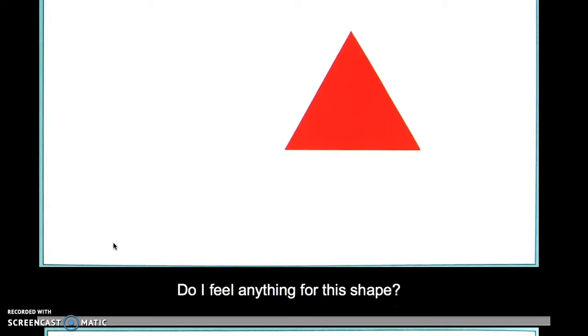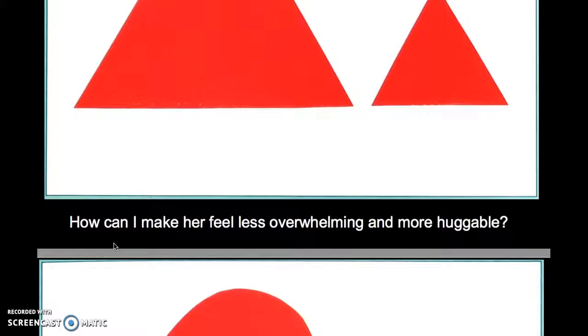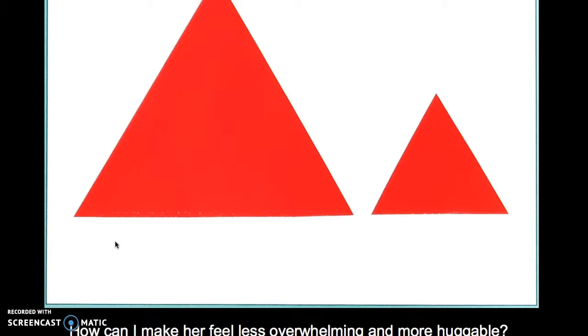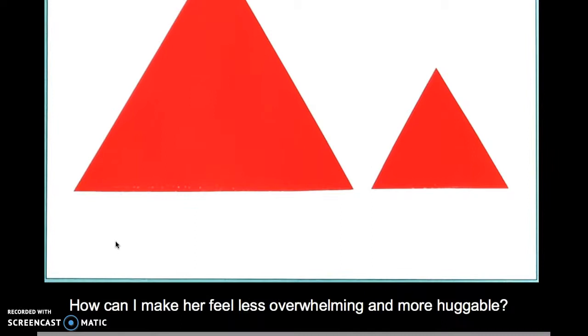We start with slides from Molly Bang's book. She shows us a simple triangle and asks, do we feel anything for this shape? She adds another and, reminding us that she's trying to construct the story of Little Red Riding Hood, asks: how can I make her less overwhelming — meaning the mother — and more huggable? So we have two shapes: mother and daughter.